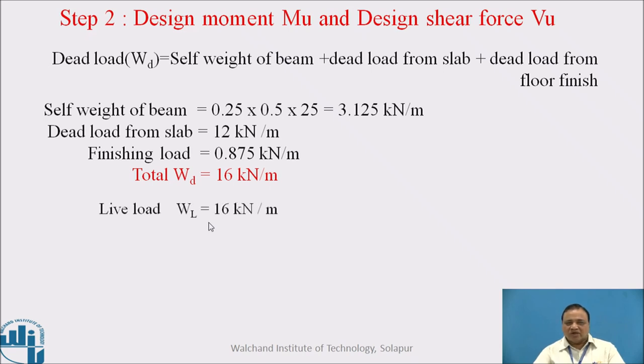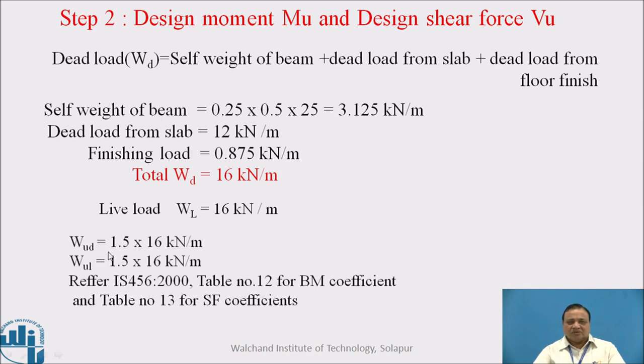Live load is 16 kilonewton per meter. Design load is the partial safety factor into dead load, that is 1.5 × 16, and 1.5 × 16 for live load. One has to refer IS 456:2000 table number 12 for bending moment coefficients and table number 13 for shear force coefficients.